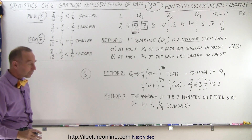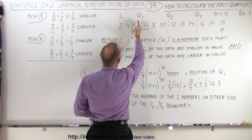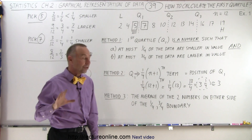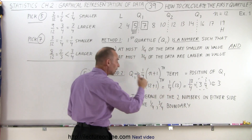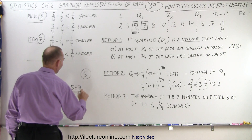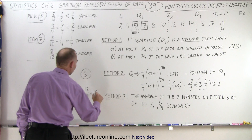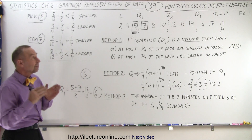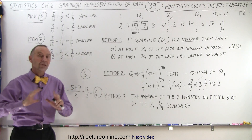For method three, when the quartile position falls between two numbers — with twenty-five percent on one side and seventy-five percent on the other — it falls between five and seven. Under that condition, we take the average of the two numbers on either side of the one-quarter, three-quarter boundary. So quartile one equals five plus seven divided by two, which is twelve divided by two, equal to six. Even though six is not one of the data points, it is a correct and perfectly valid answer under method three.